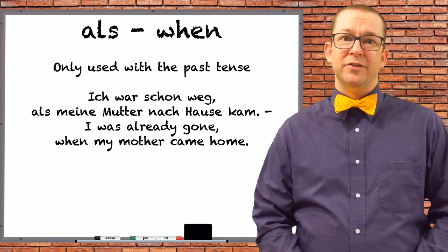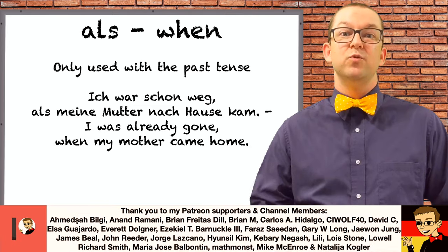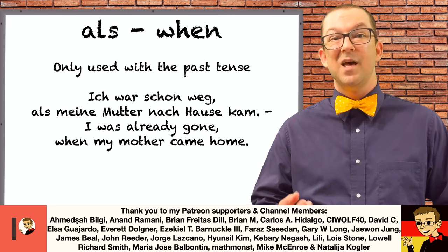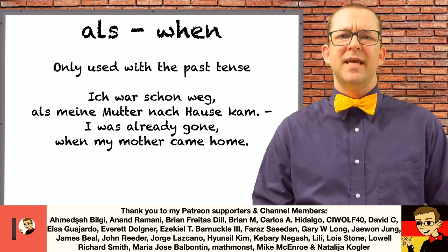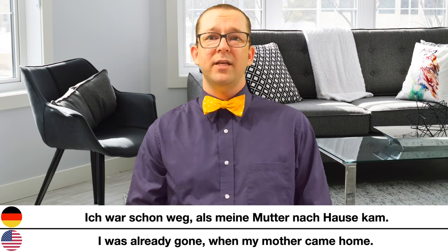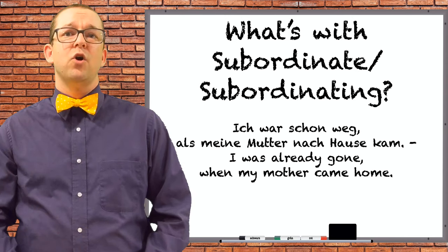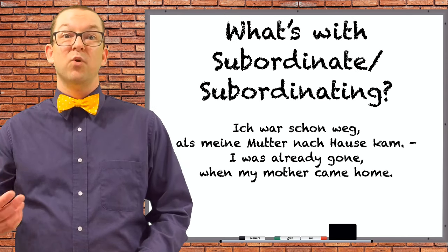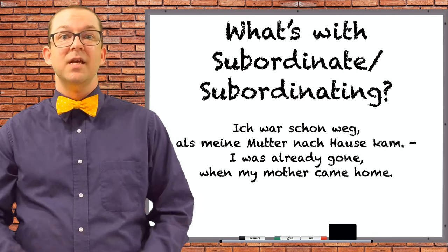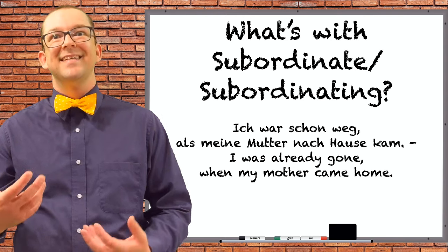First on my list of subordinating conjunctions is als. This conjunction most often translates as 'when,' but it can only be used with the past tense. This is different from the conjunction wenn, which can be used with the past tense but most often isn't. Let's take a look at a few examples: 'Ich war schon weg, als meine Mutter nach Hause kam.' — I was already gone when my mother came home. In this sentence, als is used in the second clause, called the subordinate clause.